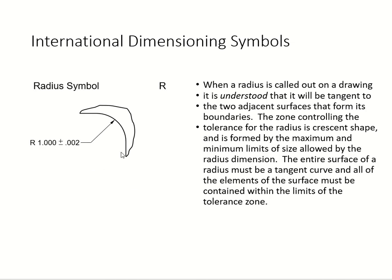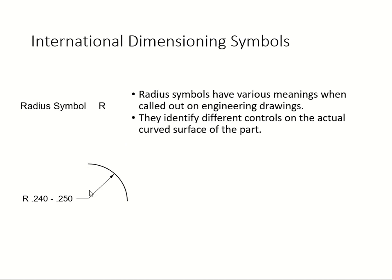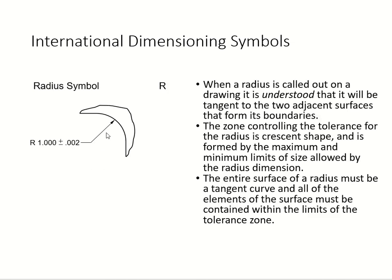The next one also uses the radius symbol but the tolerance is written a little differently, showing the tolerance zone. Looking closely, the shape is a little different from a perfect arc. A perfect arc is one thing; this surface is different because it's tangent to a curve and not a perfect shape — it's wiggling around. These are just the surfaces at the boundaries of the tolerance zone.